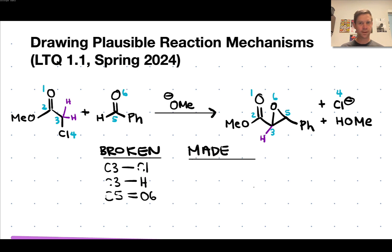In terms of bonds made, one thing we should notice is that methoxide appears to have picked up a proton. H+ plus OMe- gives HOMe, and that HO bond is one of the important bonds made here. We can also notice there are a couple of new bonds at carbon 3. There's a bond between C3 and C5 that's new, and there's a new bond between C3 and O6.